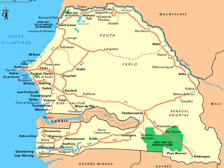The Senegalese landscape consists mainly of the rolling sandy plains of the western Sahel, which rise to foothills in the southeast. Here is also found Senegal's highest point, Banas Ridge, situated 2.7 kilometers southeast of Nepen-Diaca at 648 meters.